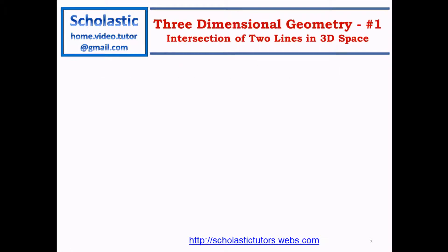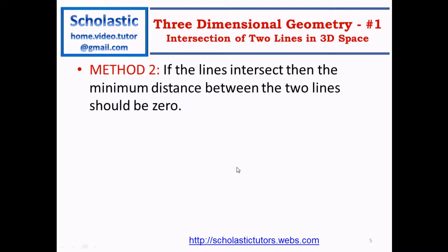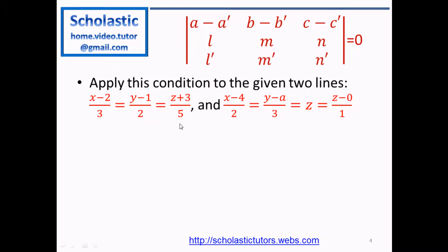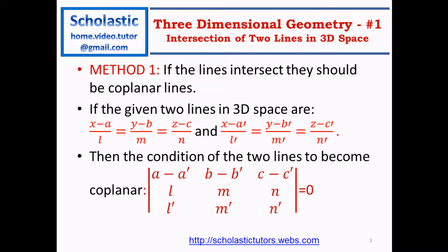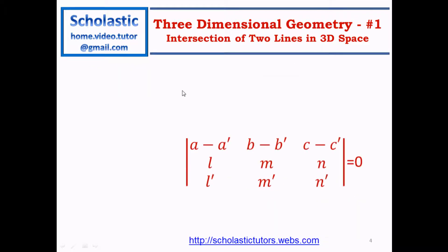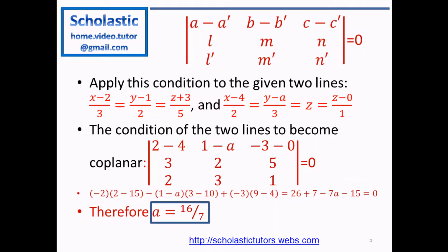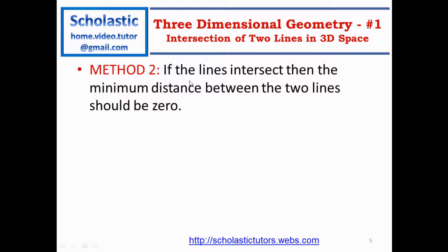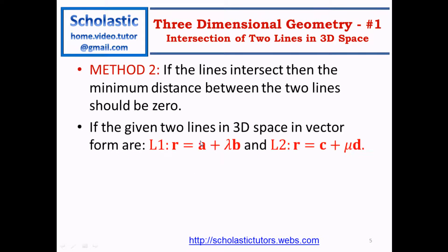There is a second method. If the lines intersect, then the minimum distance between the two lines should be 0. Method 1 was: if the lines intersect, they should lie in the same plane — coplanar lines. But Method 2 is more straightforward: if the lines intersect, the minimum distance between the two lines should be 0. In three-dimensional geometry there is a formula for the minimum distance when lines are given in vector form.